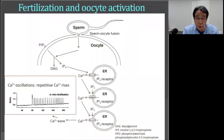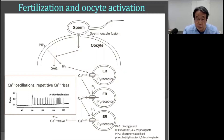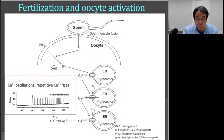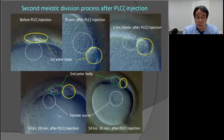This video shows the mechanism of calcium oscillation induced by sperm. At fertilization, mammalian eggs show repetitive transient calcium rises, each due to calcium release from the endoplasmic reticulum through IP3 receptors. A sperm factor — PLC-zeta — is released into the oocyte and induces a series of calcium spikes required for egg activation. This is called calcium oscillation, and IP3-producing enzyme PLC-zeta is a strong candidate for the sperm factor. This video shows the second meiotic division process after PLC-zeta injection more clearly than the previous movie.